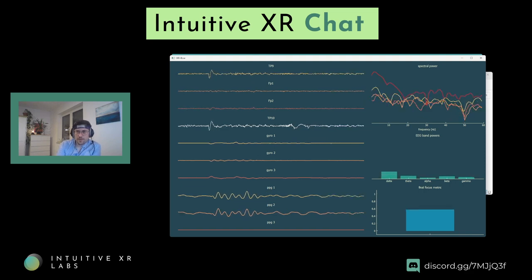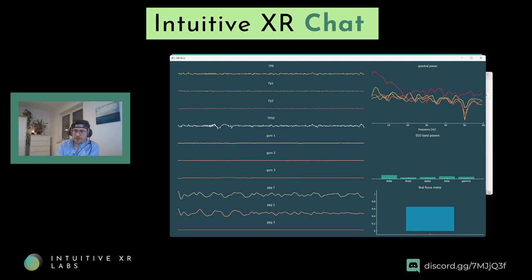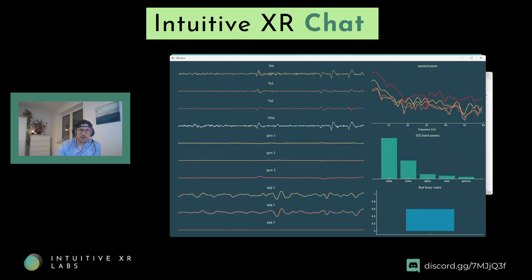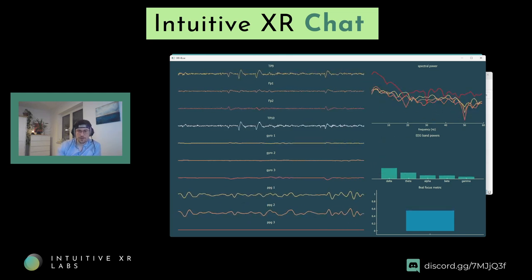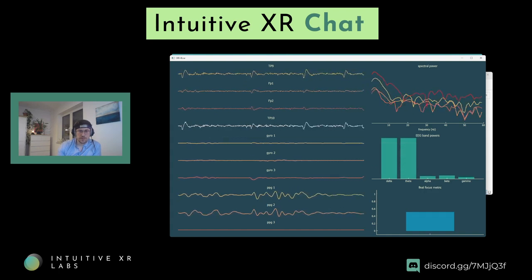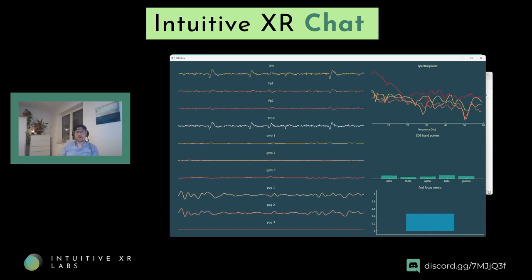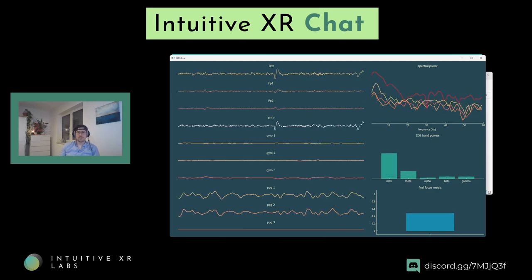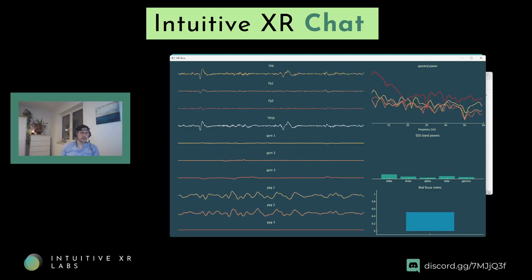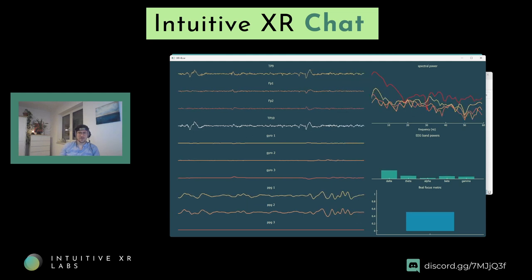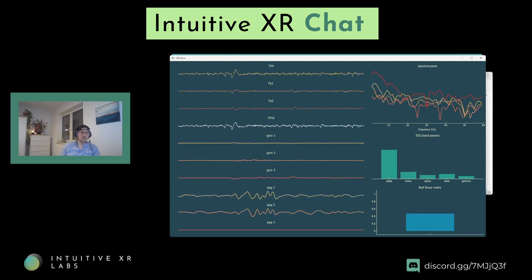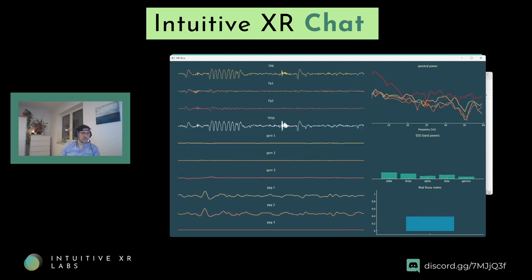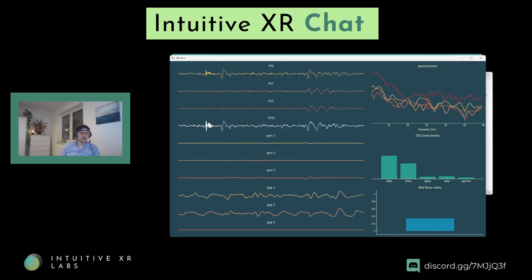Kate asks why the delta band — related to sleep — would be included for something requiring active thought like BCI. It is just measured and displayed — I'm not using it in my formulas to compute the focus power. Since the standard brain waves are these five frequency bands I chose to display them, because that's generally what people expect to see. Also, delta power is not only high in sleep — it fluctuates strongly with eye movement. If you blink a lot, lower frequency power is very high.